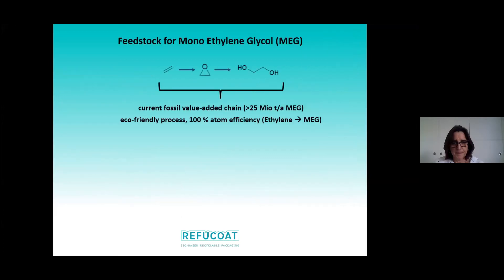So where does ethylene glycol come from? It is currently petrochemically produced on a multi-million ton scale from ethylene via ethylene oxide. This is a very nice value-added chain because it has 100% atom efficiency.